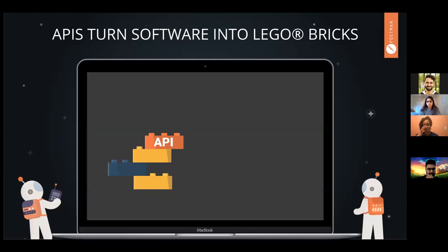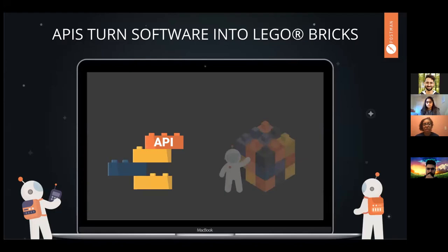The nice thing about APIs is that they basically turn software into Lego bricks. So instead of having to write so much code from scratch — if you're trying to make security, for example, there are some things you shouldn't make on your own. There are certain things you should leave to the people that have spent years fine-tuning that service. We just take bits and pieces now in software development to create the overall product, which makes development a lot faster than it used to be.